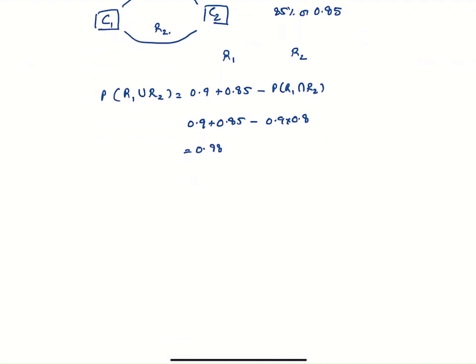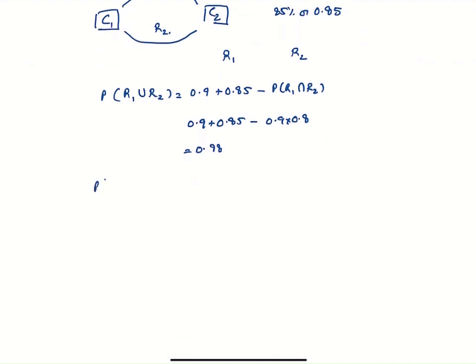As we have seen before, probability of A or B is probability of A plus probability of B minus probability of A and B. So in this case, it's probability of R1 plus probability of R2 minus probability of R1 and R2.